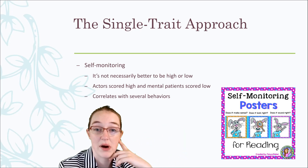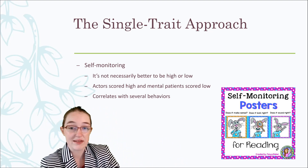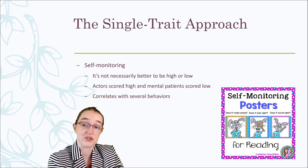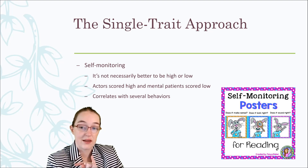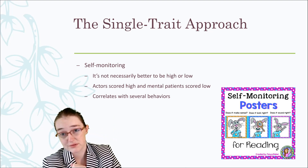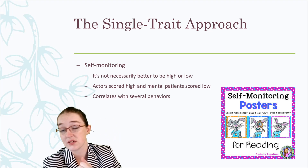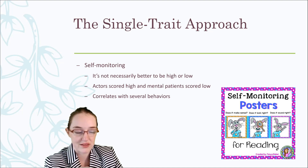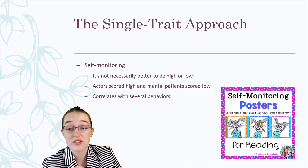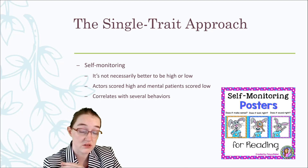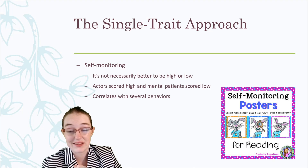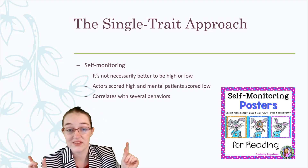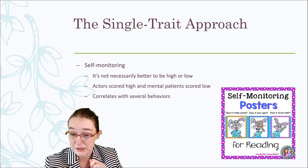Here's a classic single trait example: self-monitoring. It's the degree to which inner and outer selves and behaviors are the same or different across situations. High self-monitors have discrepant selves and behaviors — they look for cues in situations for how to act and adjust their behavior. Low self-monitors have similar selves and behaviors across most situations; they're more consistent and more guided by their inner personality. It's not necessarily better to be a high or low self-monitor — both extremes have positive and negative implications.